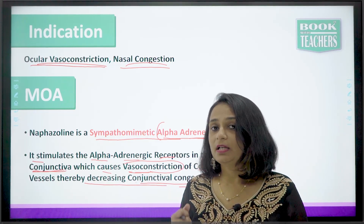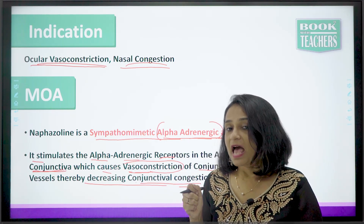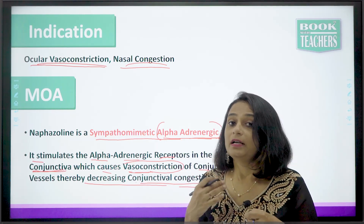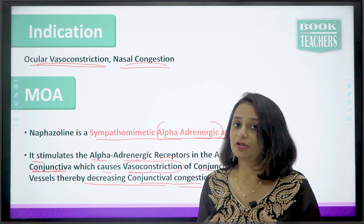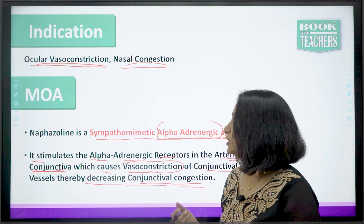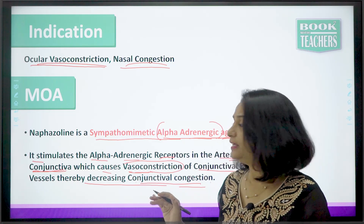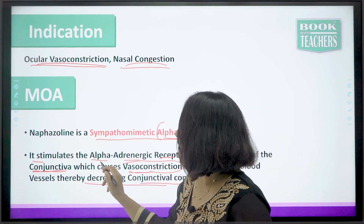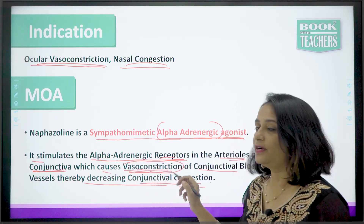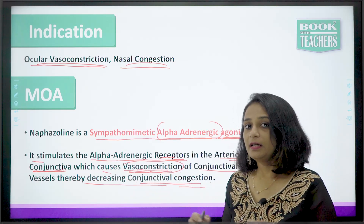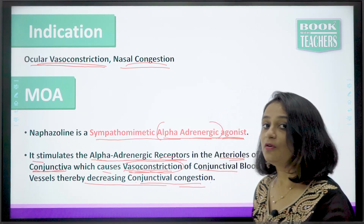In nasal congestion, a similar mechanism applies: constriction of the vessels decreases blood supply to the nose, relieving nasal congestion. So the mode of action is straightforward — naphazoline stimulates the alpha-adrenergic receptors, causes vasoconstriction, and this is indicated in the treatment of conjunctivitis and nasal congestion.